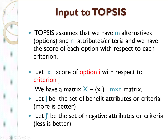TOPSIS assumes that we have m alternatives and n attributes. In the previous example, we had three alternatives and four criteria, and we have the score of each option with respect to each criterion. We assign weights to the criteria, getting weights from experts — we fill a survey, calculate the average score, and then construct a matrix Xij, the score of option i with respect to criterion j, where we put each alternative against each criterion. This is an m×n matrix. There are two types of criteria: benefit attribute criteria and cost attribute criteria. Let J be the set of benefit attributes where more is better, and let J' be the set of negative (cost) attributes where less is better.